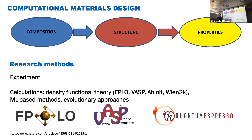In our laboratory work we will use experimental data for structure. For example, we will work with diamond, titanium diselenide, ferrum selenium, and other structures. We will take them from experiment.